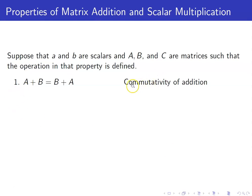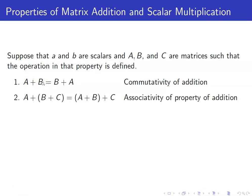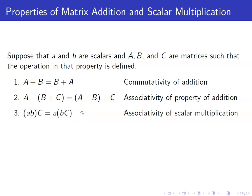First, we have commutativity. This is saying that if we add two matrices, the order does not matter. Second, matrix addition is also associative, meaning it doesn't matter where you start your addition — you will still get the same answer. Hence, just like with real numbers, we write A plus B plus C simply as A plus B plus C.